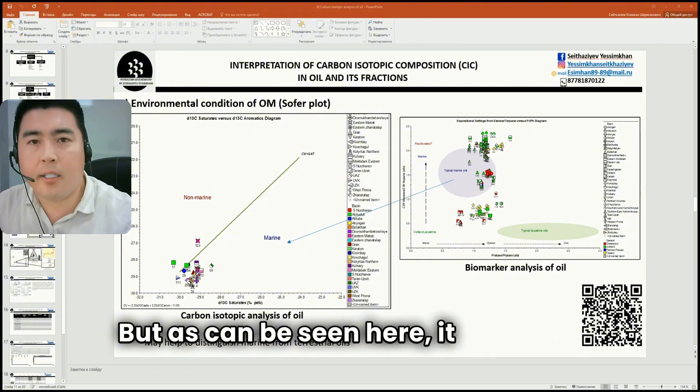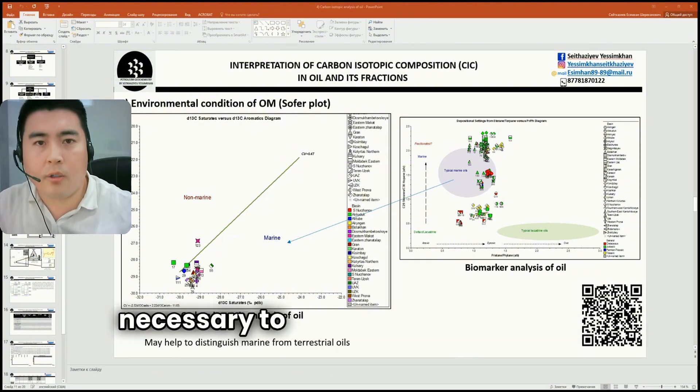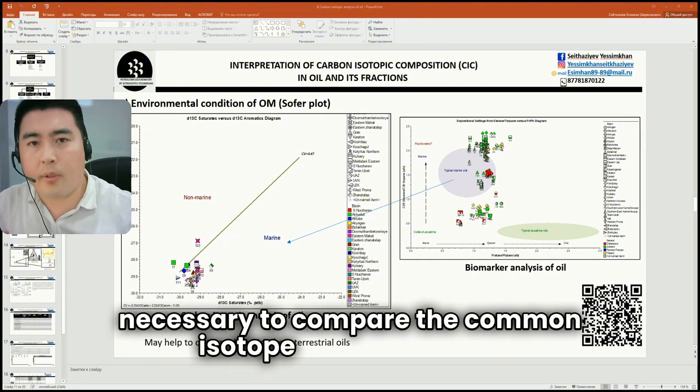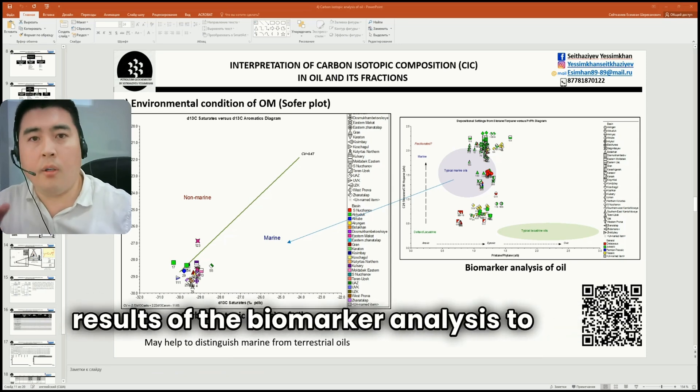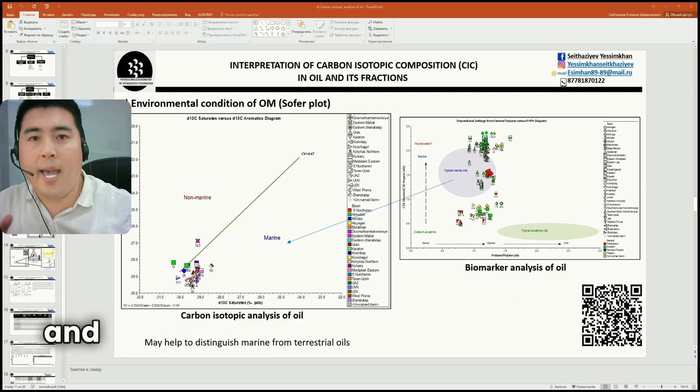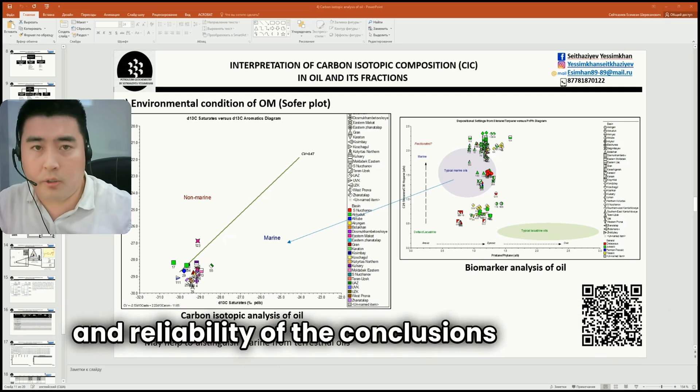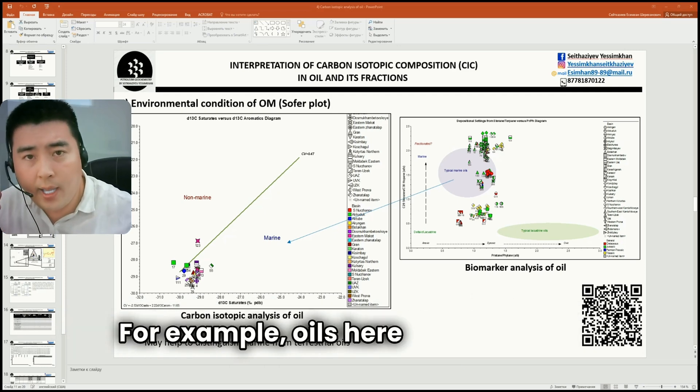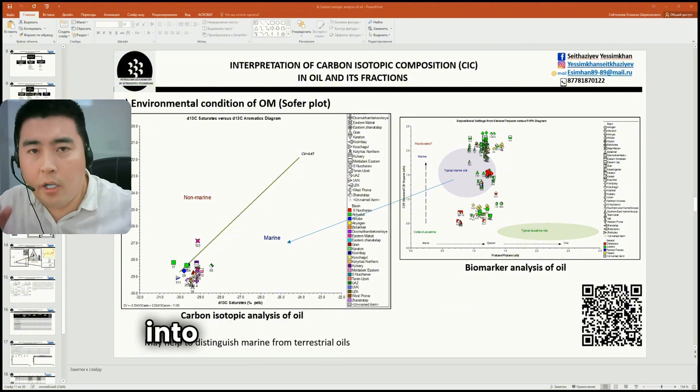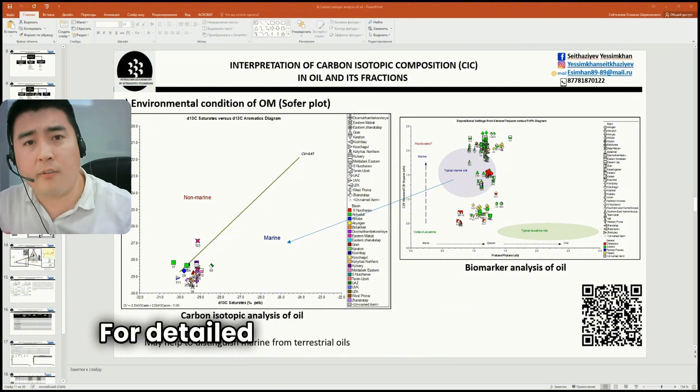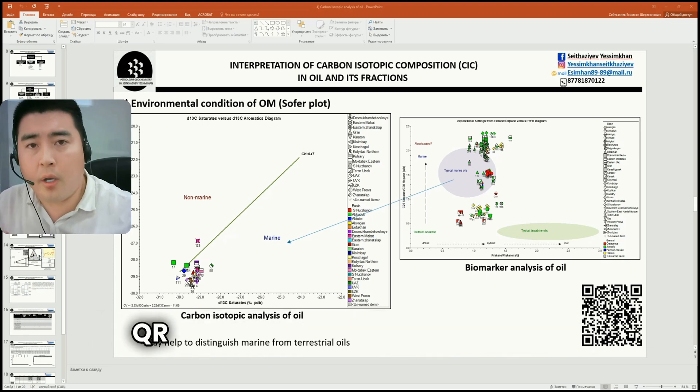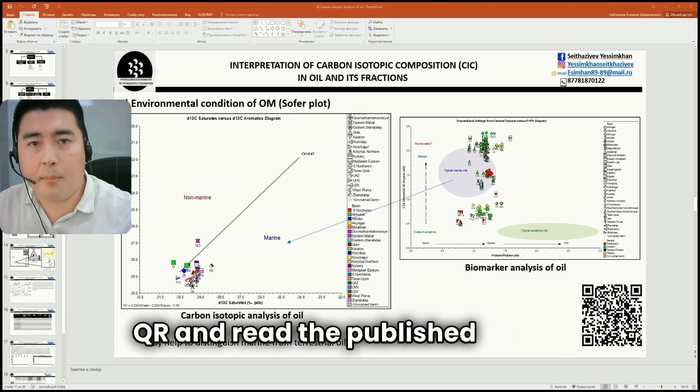But as can be seen here, it is always necessary to compare the carbon isotopic results with the results of the biomarker analysis to ensure the correctness and reliability of the conclusions obtained. For example, oils here and there fall into the zone of marine sources. For detailed information, you can scan the QR code and read the published paper.